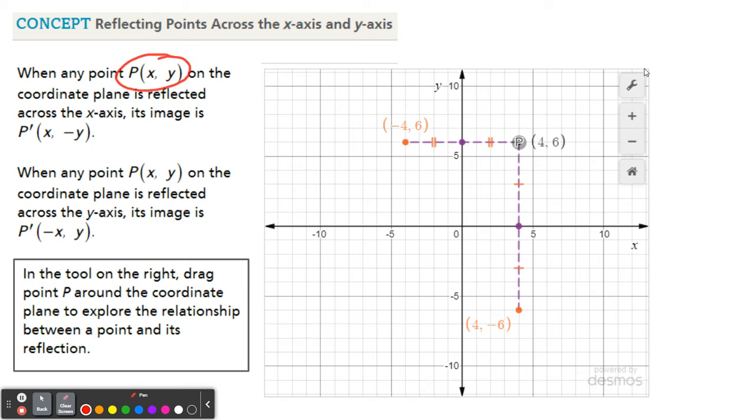So again, if you have a point and you go across the x-axis, your y-coordinate will become opposite. Versus if you go across the y-axis, so if you go across the y-axis, it is your x that becomes opposite.